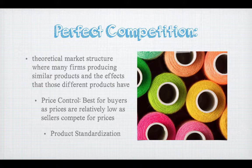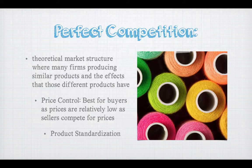Perfect competition is our first market structure, and it's a theoretical market structure — meaning in theory it exists, but in practice it probably doesn't. There would be many thousands of firms, no single firm would have control over the market, and all products are essentially the same. Price control in perfect competition is by far the best for buyers, because as a consumer everything is essentially very cheap due to so many people competing, which continues to drive prices down.